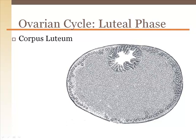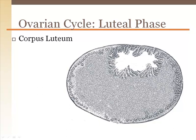Once the egg has left the ovary, only the surrounding follicular cells remain. These cells enlarge to become the corpus luteum, which is a large mass within the ovary that secretes progesterone for 14 days. After 14 days, the corpus luteum shrivels up and stops producing progesterone. This marks the end of the ovarian cycle.